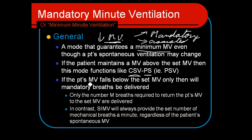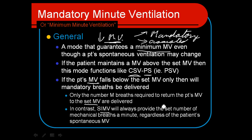If the patient falls below the minute ventilation established by the operator, the ventilator will kick in giving those mandatory and assisted breaths; otherwise it allows the patient to spontaneously breathe in pressure support mode. It will only give the number of mandatory breaths required to return the patient's minute ventilation to the set minute ventilation. So if they drop down just a little but are still spontaneously breathing, it'll kick in with an IMV breath to augment their minute ventilation and boost them above that goal.